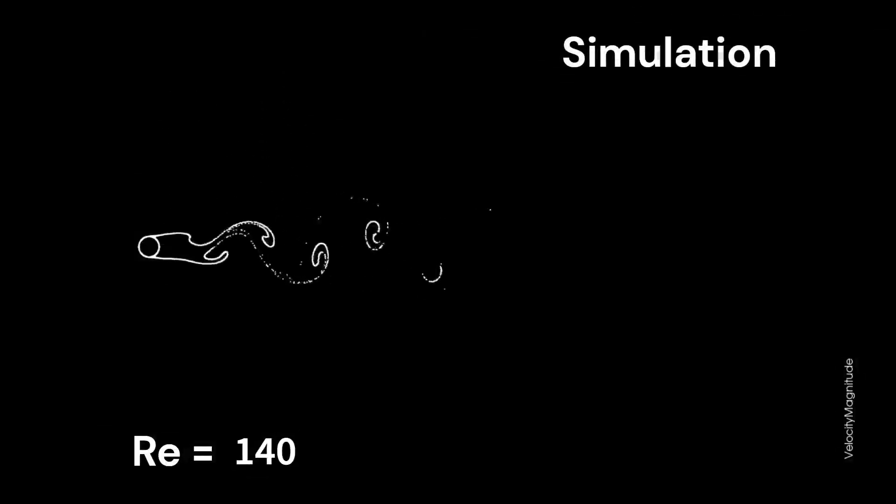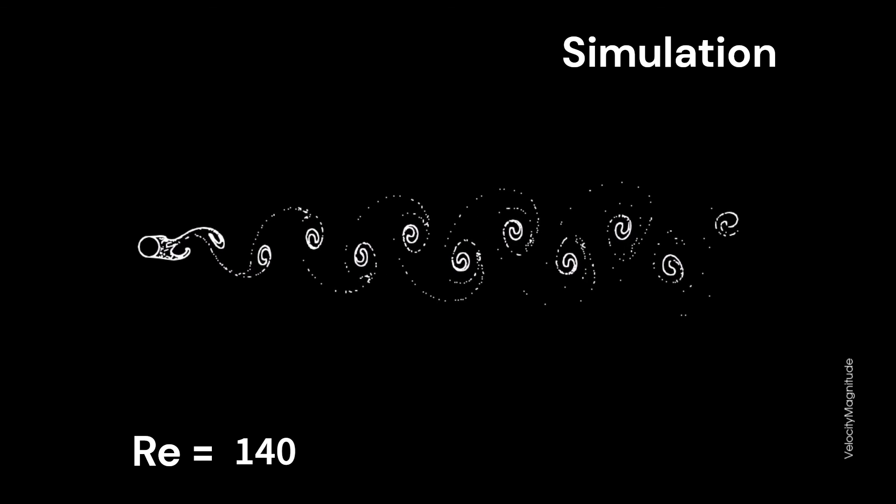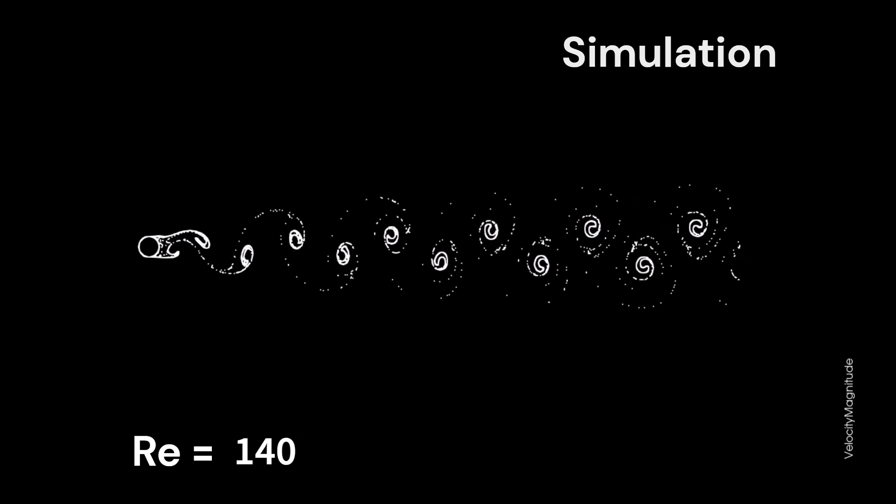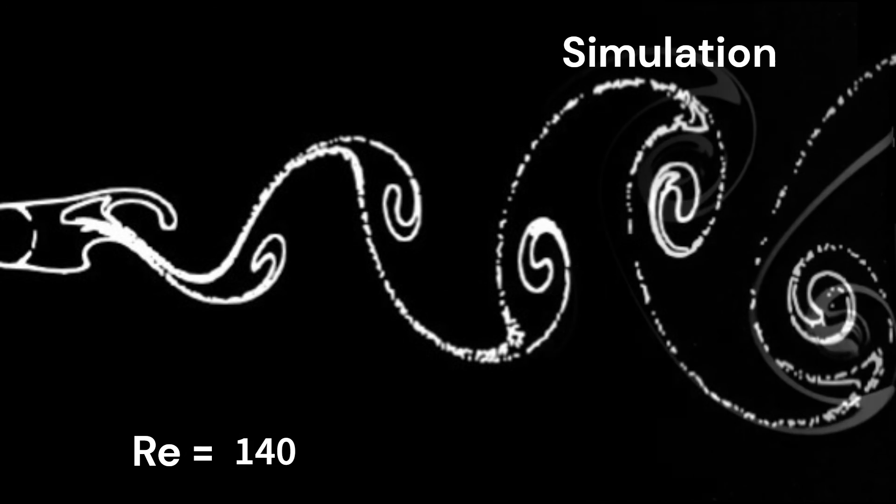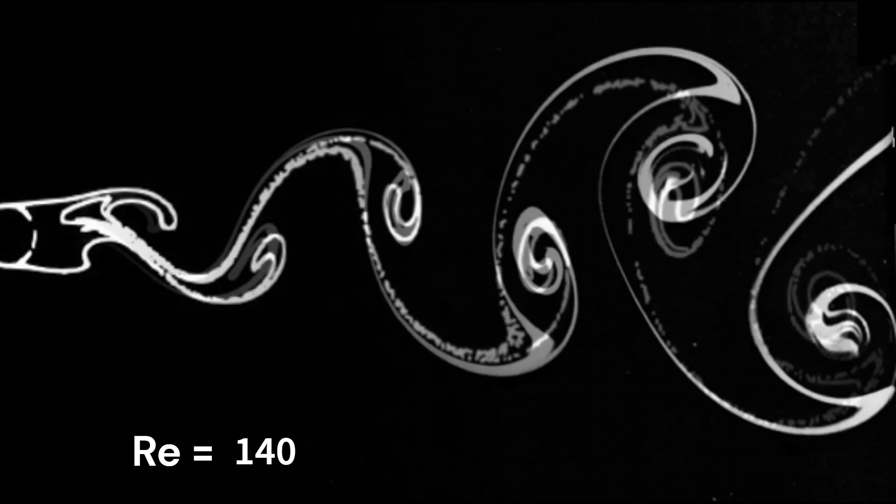When we zoom out, we see that these isolated vortices are transported far beyond the cylinder. This resulting pattern is called the von Karman vortex street, a well-known phenomenon that is also observed in clouds passing mountains or ocean currents around islands.